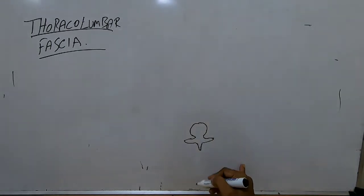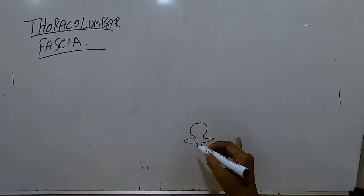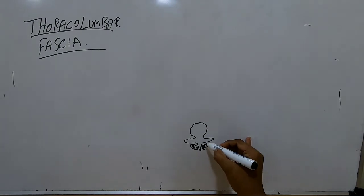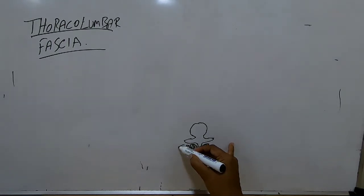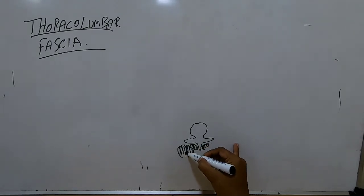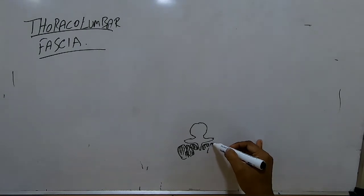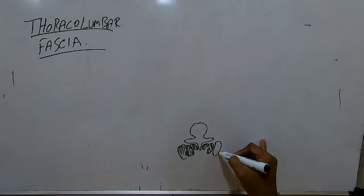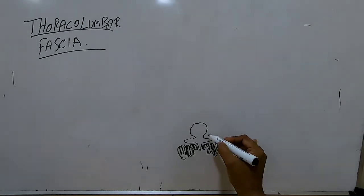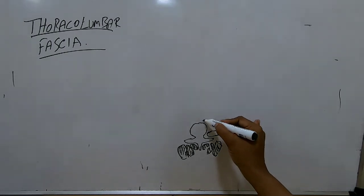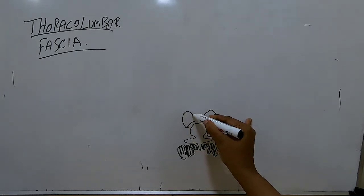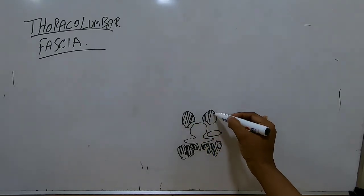In the superior view, you have the multifidae muscles, then the longissimus - basically the erector spinae group - then iliocostalis on both sides. Here you have quadratus lumborum on both sides, and then anteriorly iliocostalis. These are all the muscles visible from the superior view.